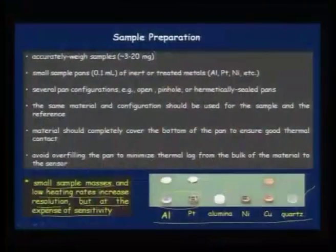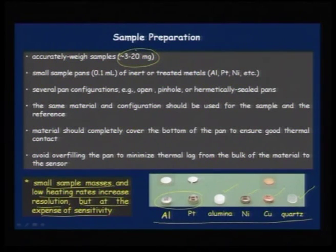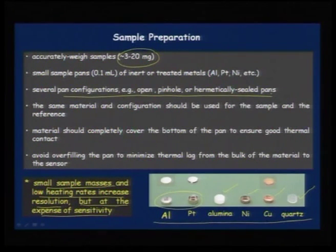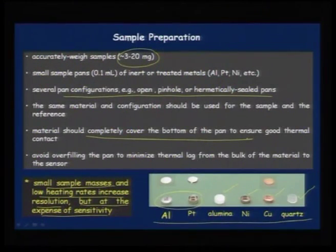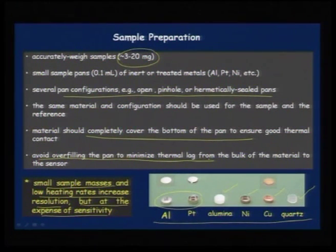Small sample masses and low heating rates increase resolution but at the expense of sensitivity; fast heating rates and large samples increase sensitivity but reduce resolution. Typically 3 to 20 milligrams is taken. Same material and configuration should be used for both sample and reference, and material should be completely covered at the bottom of the pan for good thermal contact. Avoid overfilling the pan to minimize thermal lag.